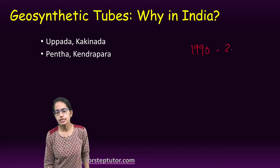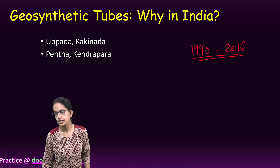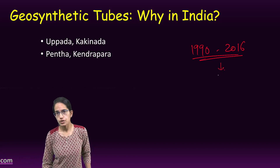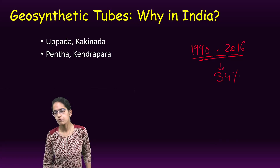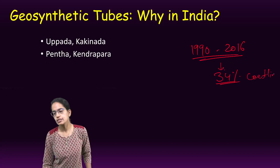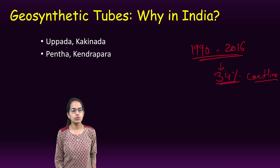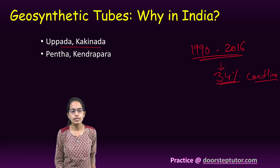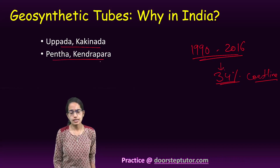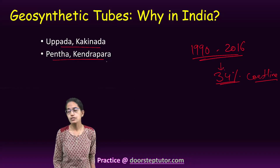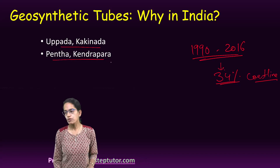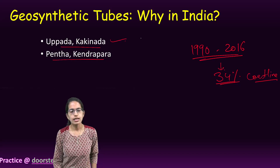In India, from 1990 to 2016, under the National Centre for Coastal Research, Ministry of Earth Sciences, it was found that 34% of India's coastline is under some form of threat. The eastern coast has two key regions: Upada near Kakinada and Petha near Kendrapada in Odisha.